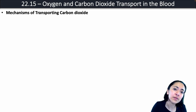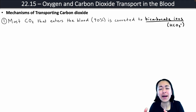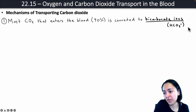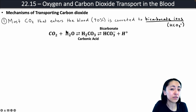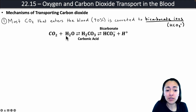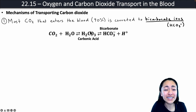Now let's look at the mechanisms our body uses to transport carbon dioxide. Most carbon dioxide that enters the blood — about 90% of it — is converted to bicarbonate ions, with the molecular formula HCO3⁻. Carbon dioxide is very reactive with water, and your blood is mostly water, so carbon dioxide will quickly react with the water in your blood and become carbonic acid. Carbonic acid dissociates, or falls apart, really quickly into bicarbonate and hydrogen ions.